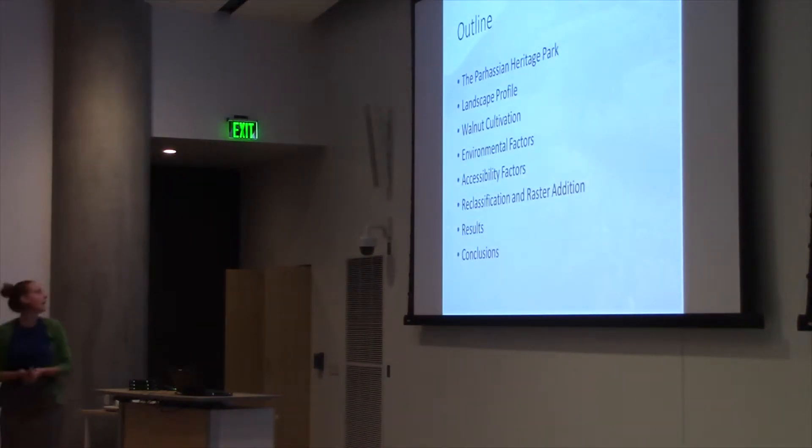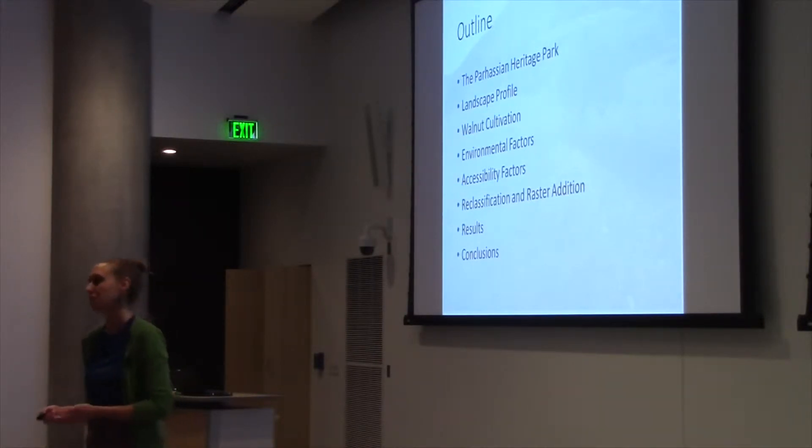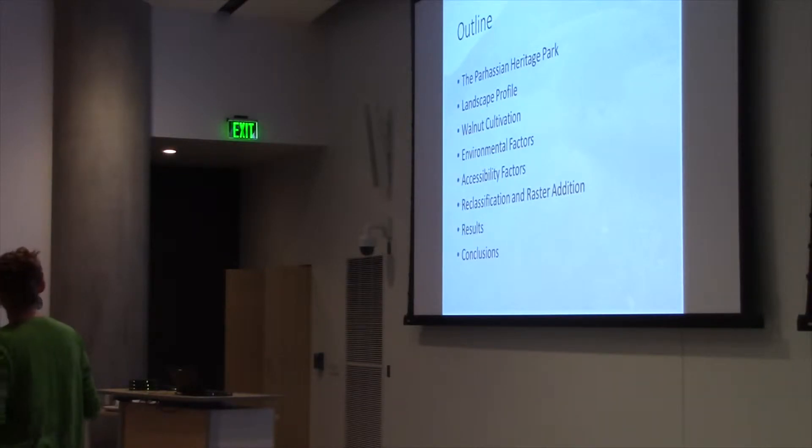Okay, just so we all know where we're going, here's the outline for this evening. I'm going to talk a little bit about the Parasian Heritage Park, just so we all know where we are in the world. A little bit about the landscape profile within the Parasian Heritage Park, or at least the part that I'm going to talk about around Mt. Lekayon. Walnut cultivation, of course. The environmental factors that went into my suitability analysis, the accessibility factors that went into my suitability analysis, and then of course the reclassification and raster addition that I did to get my results. Then of course I'll talk about any conclusions and hopefully we'll have time for questions as well.